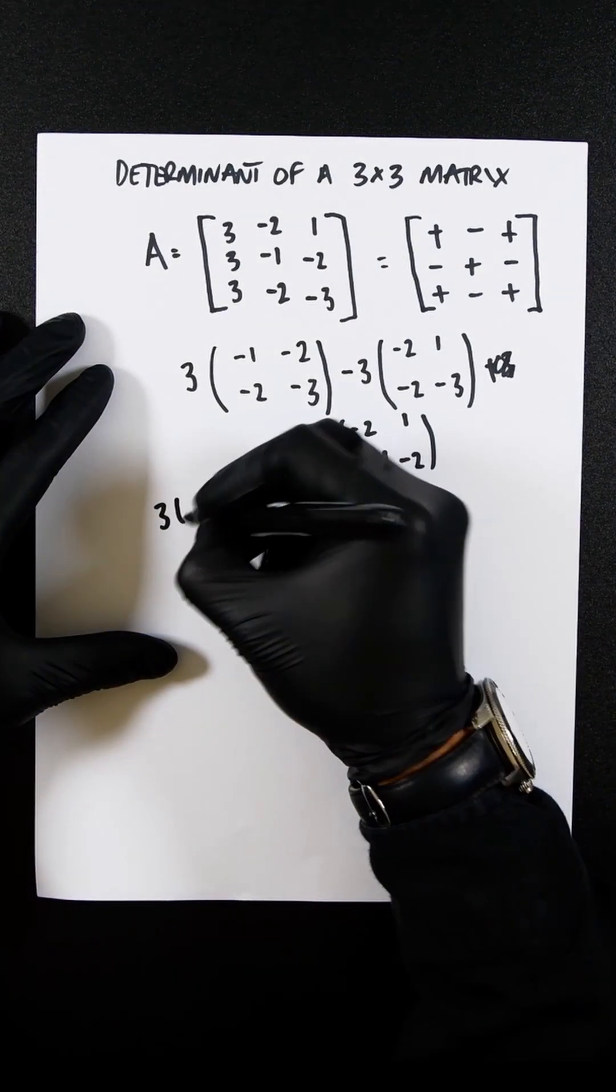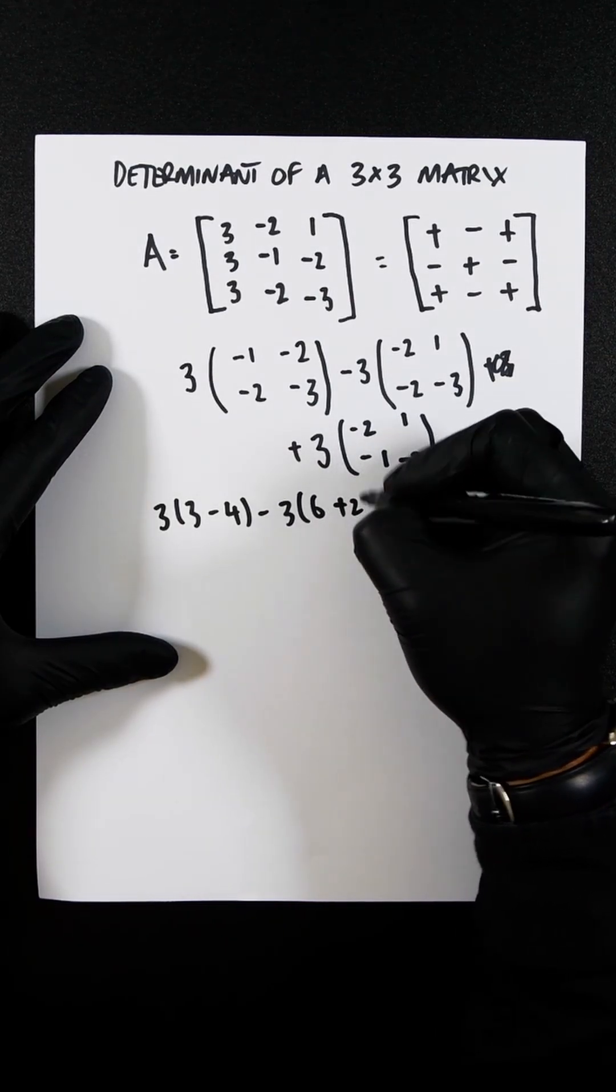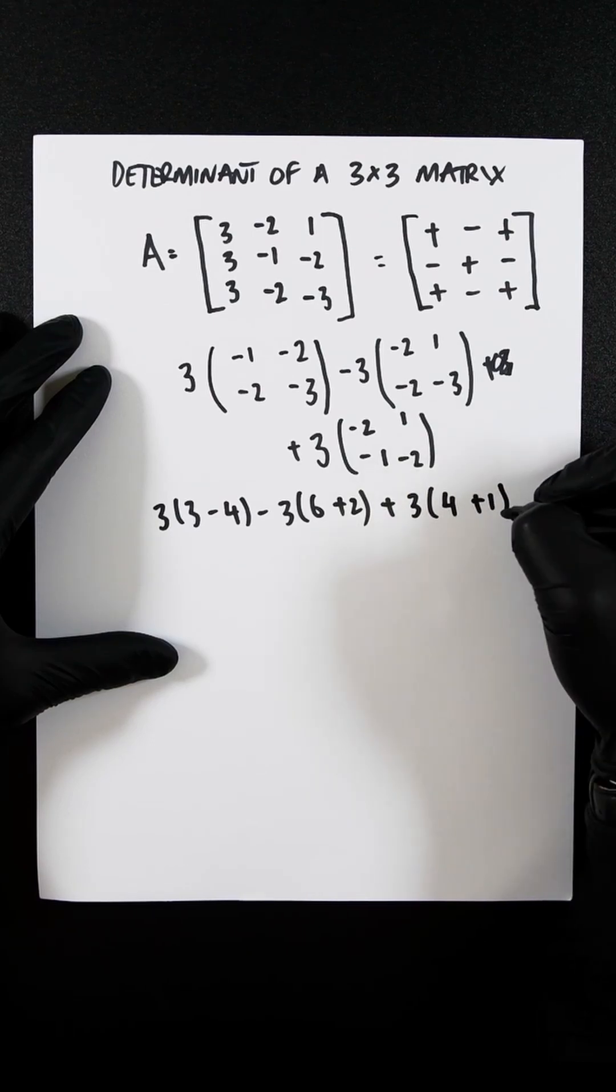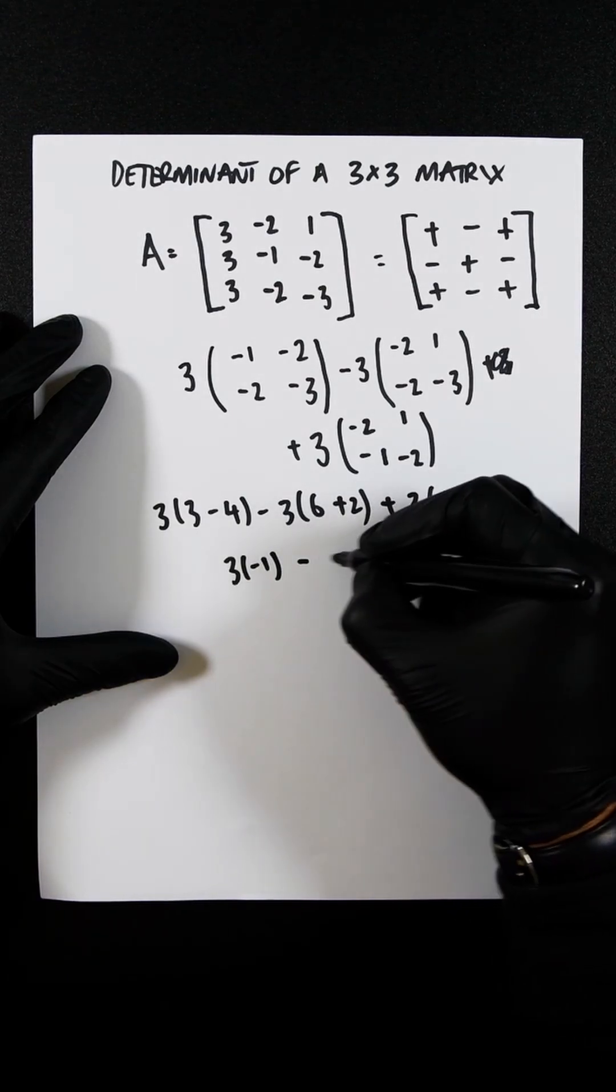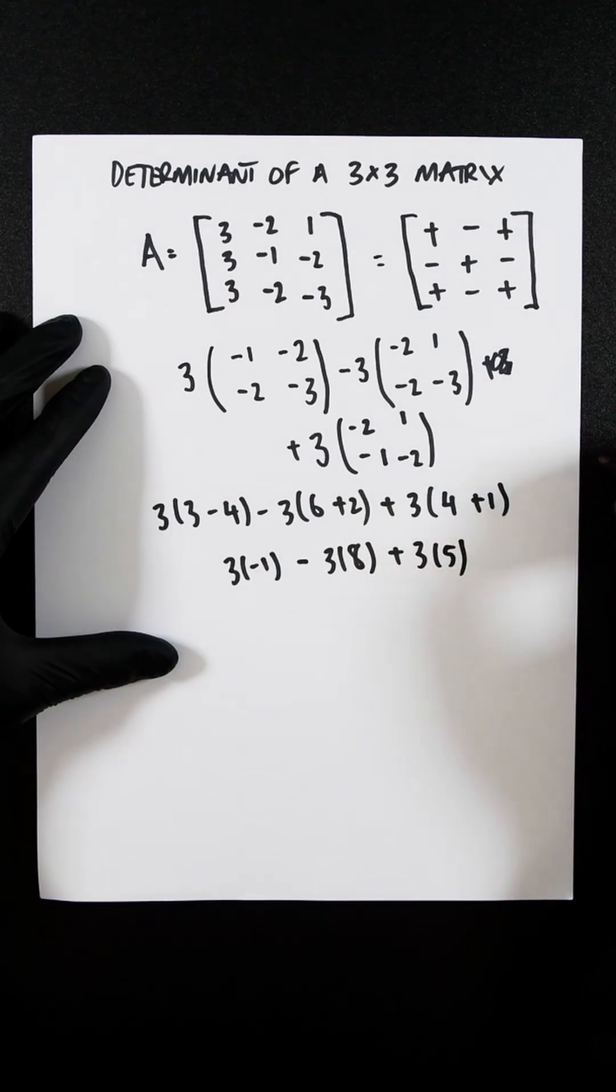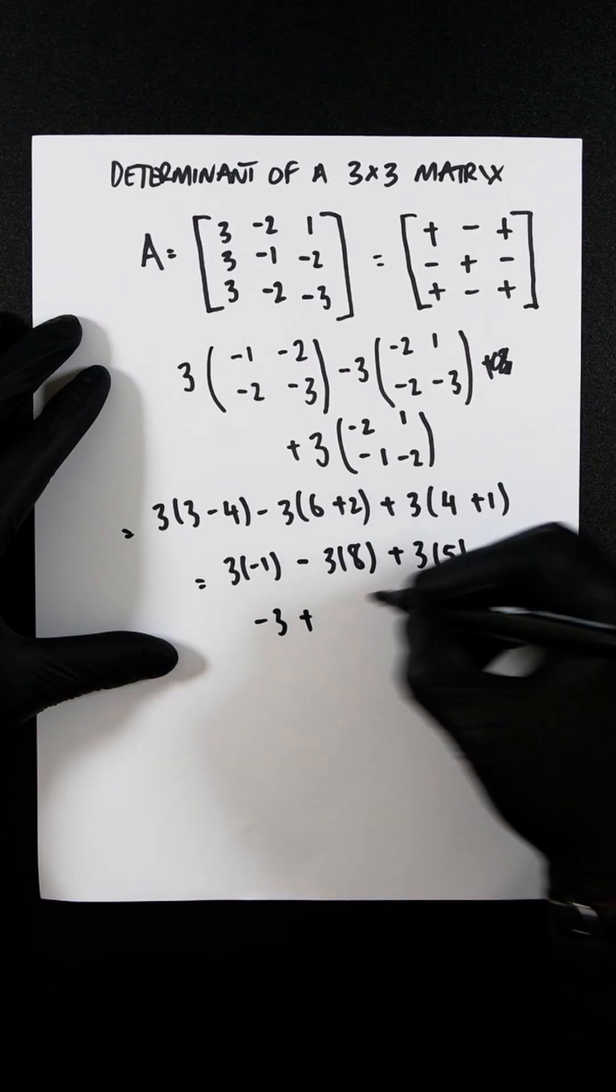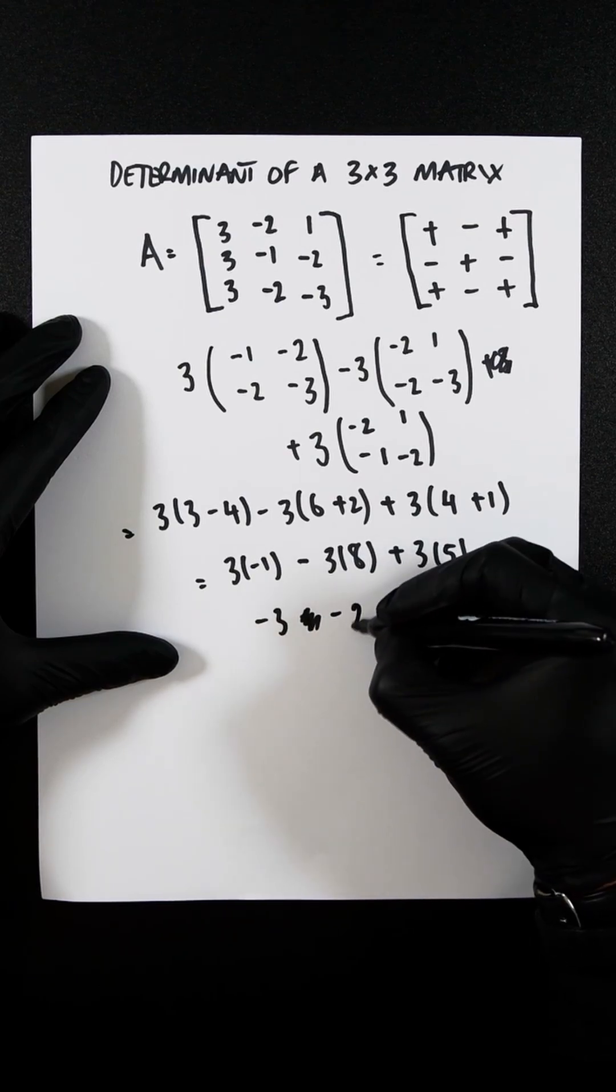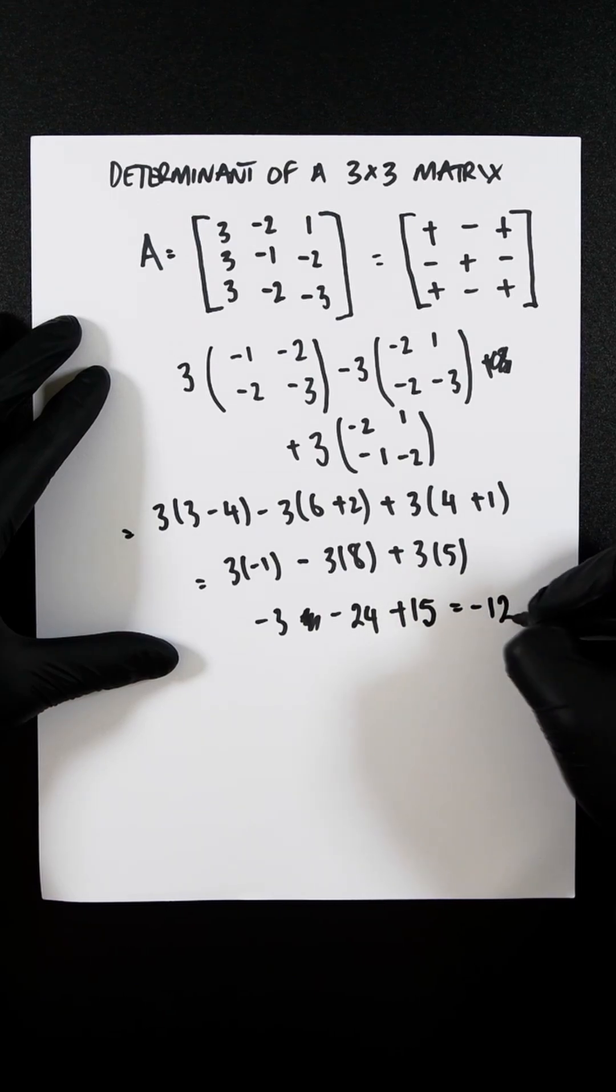So we're going to have 3 times 3 minus 4, minus 3 times 6 plus 2, plus 3 times 4 plus 1. If we now simplify this all out, you're going to get 3 minus 1, minus 3 times 8, plus 3 times 5. And then we will have minus 3, minus 24, plus 15, which is going to equal minus 12.